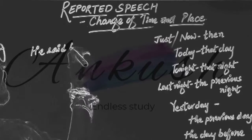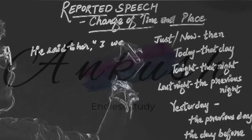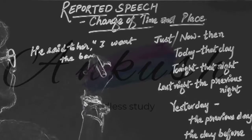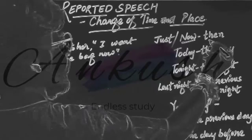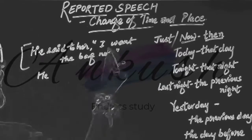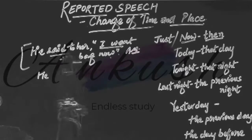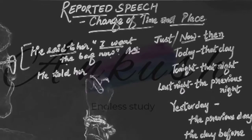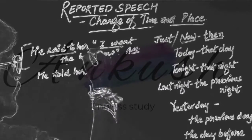Suppose we take the example: he said to her, "I want the bag now." Now 'now' will get changed into 'then', as we know the rule for changing it. This is an assertive sentence, so in place of 'said to' we will use 'told'.